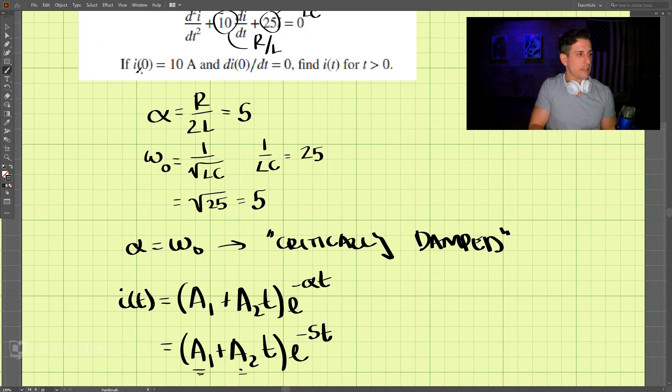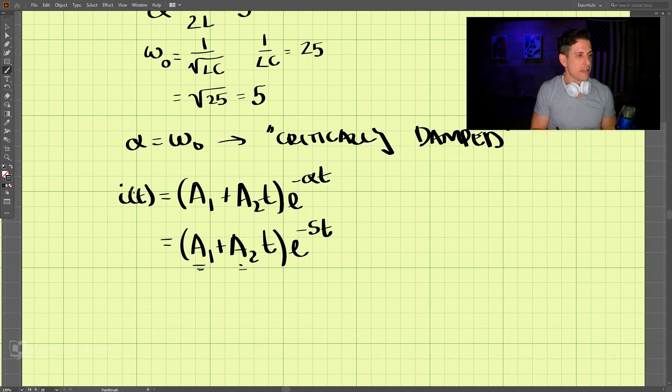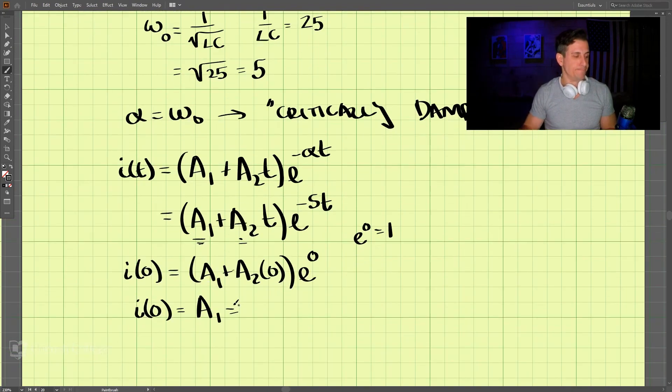So we know several things. We know i(0) is 10A, 10 amps. So let's plug in 0 to this equation. i(0) is equal to A1 plus A2 times 0, e to the negative, well, it just comes out to be 0. So this value is 1. E to the 0 is equal to 1. And then we just come out i(0) is equal to A1, which is equal to 10. So we have 10 there, 10.